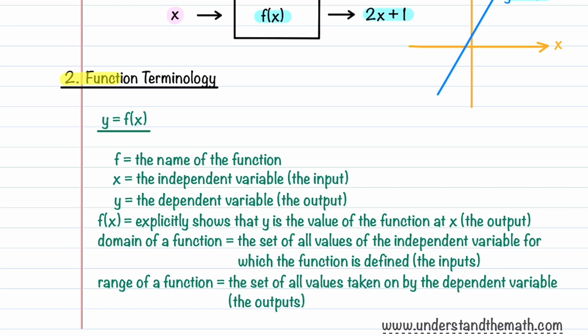Let's now learn what each part of our function represents. If we have a function y equals f of x, f is just the name of the function. x is the independent variable, which is the input. y is called the dependent variable, and it's just the output. When you write y as f of x, you're just showing that y is the value of the function at x.